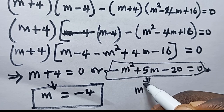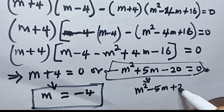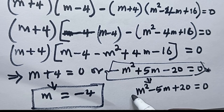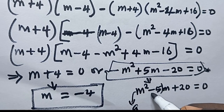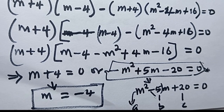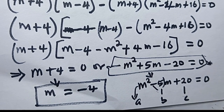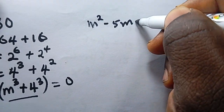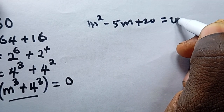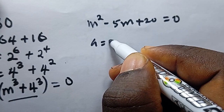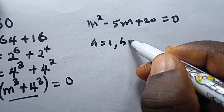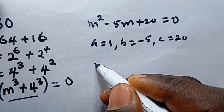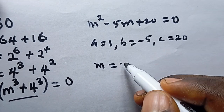The remaining factor is a quadratic equation. I'll multiply through by −1 so it becomes m² − 5m + 20 = 0. From this I can identify a = 1 (the coefficient of m²), b = −5 (the coefficient of m), and c = 20 (the constant).